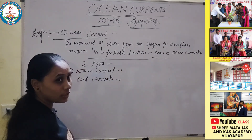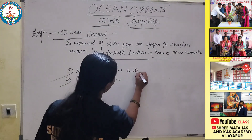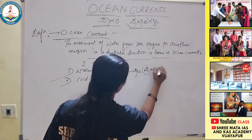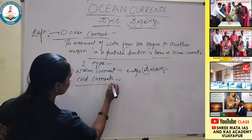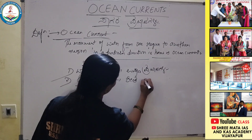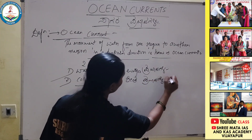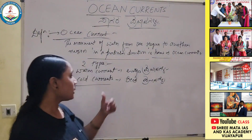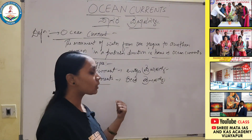In Kannada, warm currents are called Ushnapravahagala. So here are two types of ocean currents in Kannada.